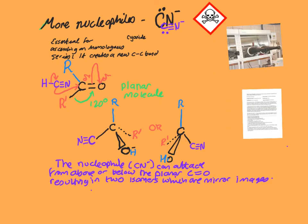The name of these mirror image molecules — anything that has a non-superimposable mirror image of itself — is called an enantiomer. So we end up with a pair of enantiomers.